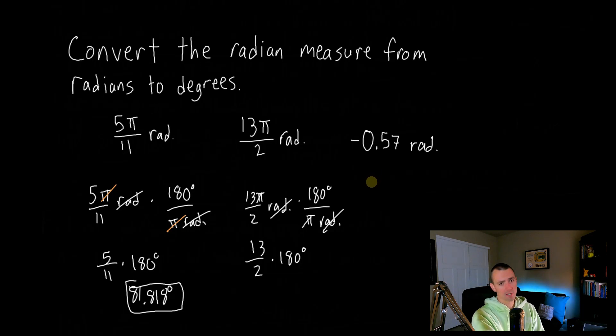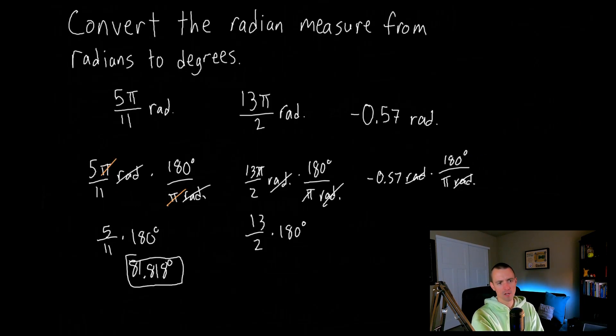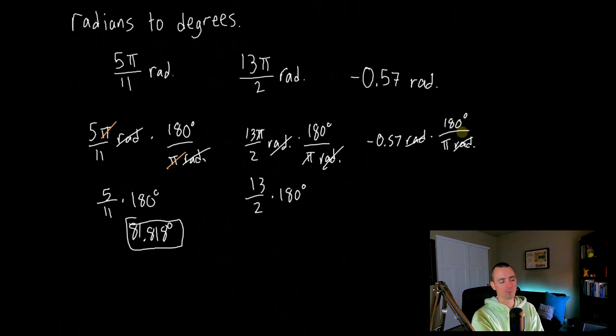It's the same idea because we're still just going to take our negative 0.57 radians and multiply it by 180 degrees over pi radians. So the radian unit of measure is still going to cancel like it was before and we're still going to be left with just degrees. So that kind of confirms for us that we've set up our fraction in the right order. But what we're going to end up with is just negative 0.57 times 180 over pi degrees.